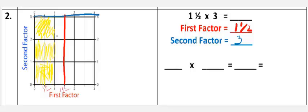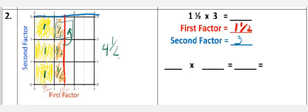Let me use a different color just to show you. Here's my halves — there's 1 half, there's another half, and there's another half. So I've got 1 whole, 2 wholes, 3. Then I've got a half, 1 half. These two — I can move that one right there, and now I've got a whole. That would make this whole picture right here. And then I've got 1 half left. So I've got 1, 2, 3, 4, and 1 half. So there's my answer — 4 and 1 half.